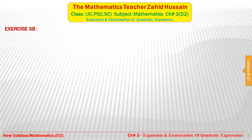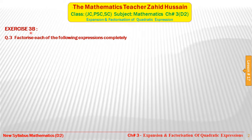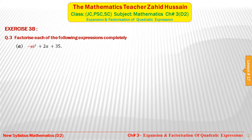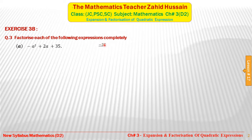Let's solve question number 3 from exercise 3b, which asks us to factorize each of the following expressions completely. Part A: minus a² plus 2a plus 35. We will multiply the coefficient of a² by the constant term. The coefficient of a² is minus 1, so minus 1 multiplied by plus 35 gives minus 35. Because this number is negative, the two factors will have different signs — the larger will be positive and the smaller negative.